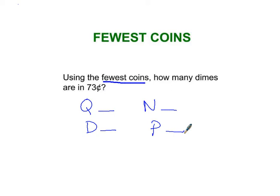You always start with the quarters. How many quarters can you fit into 73 cents? Well, 73 cents, one quarter that's 25, two quarters that's 50, three quarters is 75 cents. That's too much. Two quarters.